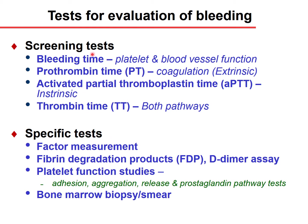The most common and relatively easiest screening test is the bleeding time, which evaluates platelet function, platelet number, and blood vessel function. The bleeding time is not influenced by coagulation disorders. Prothrombin time measures the extrinsic coagulation pathway. The activated partial thromboplastin time, or APTT, measures the intrinsic and common pathways.